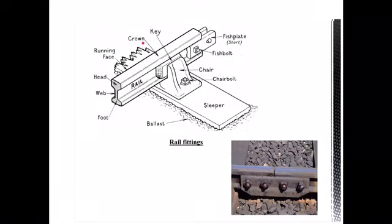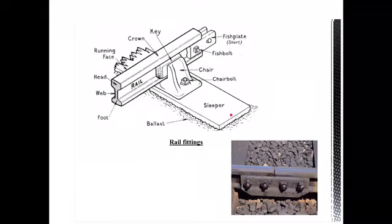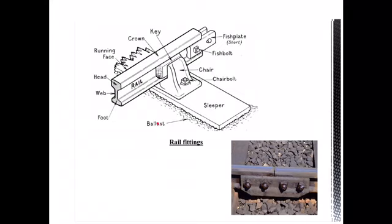The picture shows various rail fittings used to connect the rail with the sleeper. The rail is divided into head, web, and foot sections. The rails are connected to the sleeper with the help of chair bolts and chair keys. One rail section is connected to the next with the help of fish plates and fish bolts. We will be discussing rail fittings in detail in the coming classes. With this I conclude today's session, and tomorrow's class will continue the discussion on rails. Thank you.